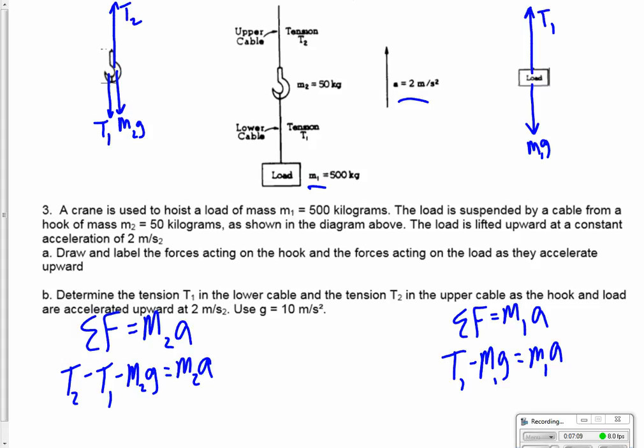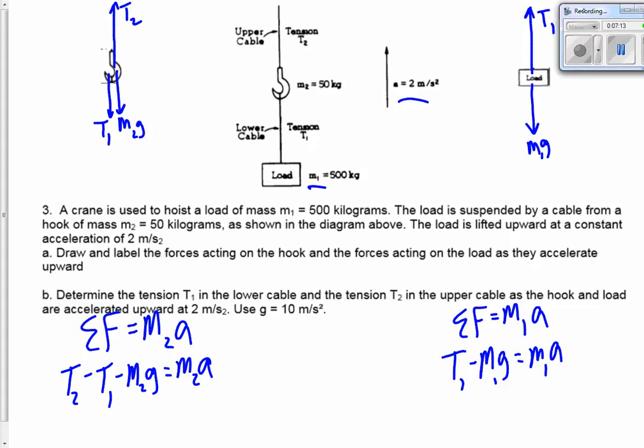Get this out of the way. T1 equals 500A plus 5,000 newtons. A is 2. So if A is 2 meters per second squared, then this will equal 6,000 newtons. So T1 has to be equal to 6,000 newtons. A is equal to 2 meters per second squared.